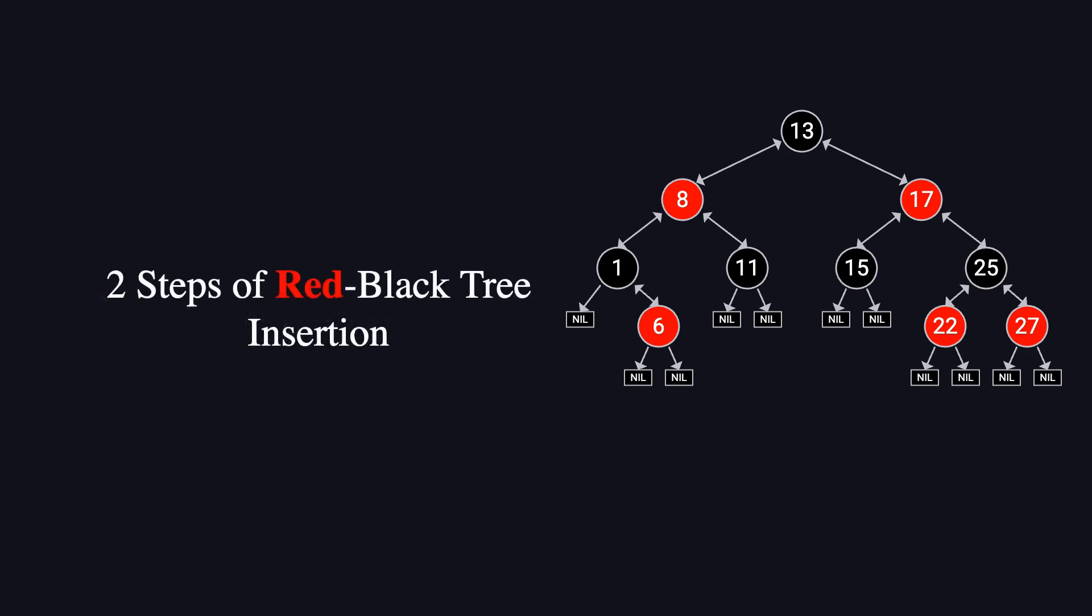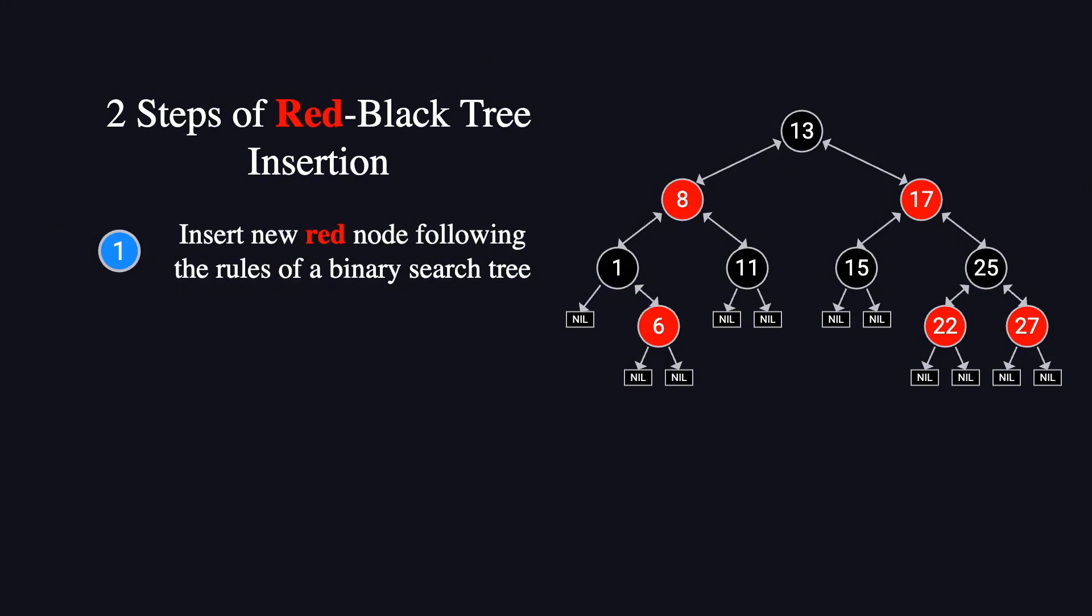The insertion process in a red-black tree happens in two main steps. First, we insert the new node, just like in a regular binary search tree. Starting from the root, we compare values.